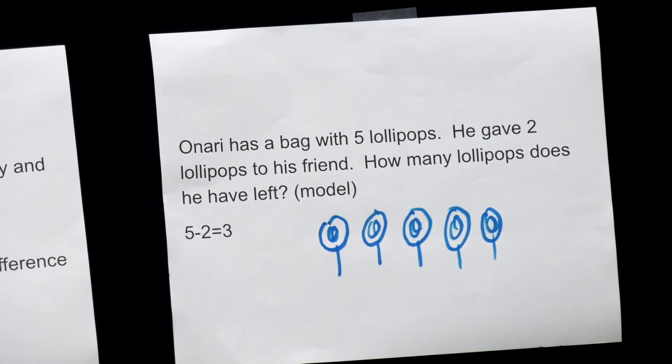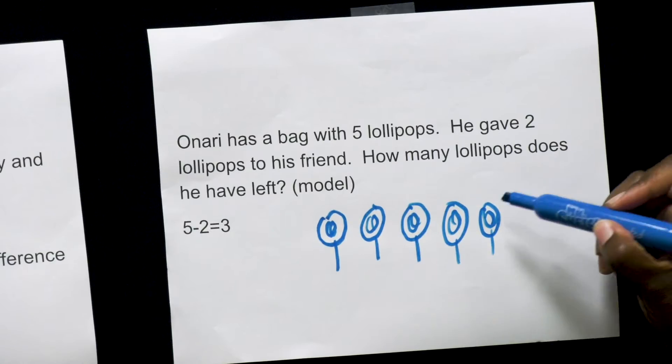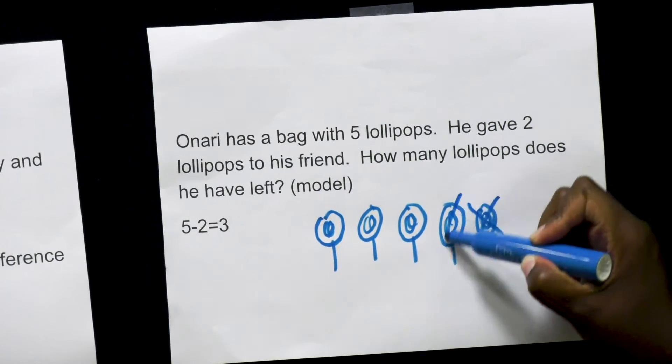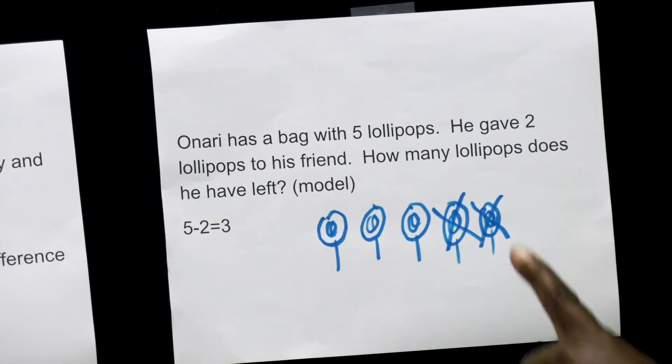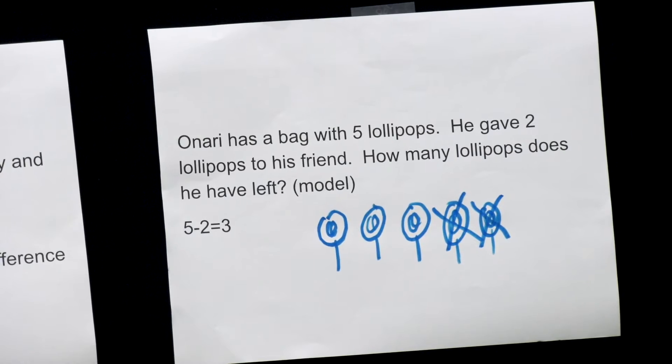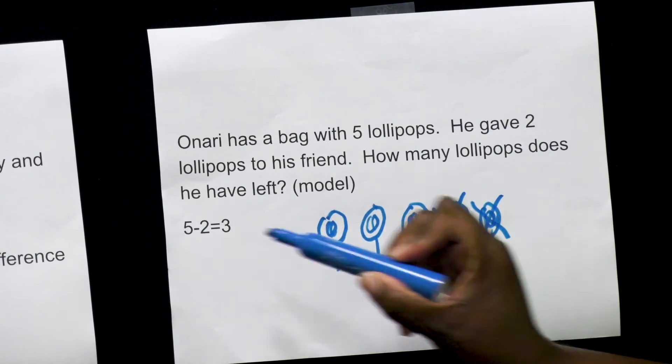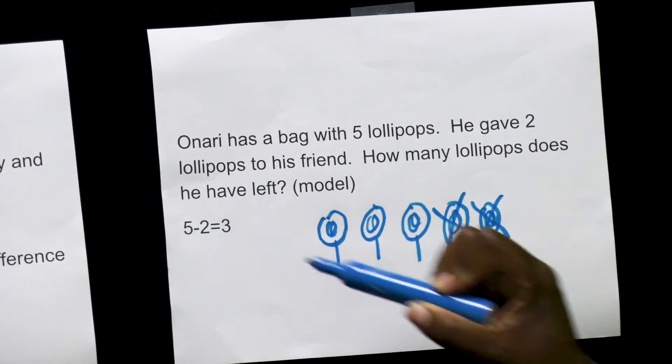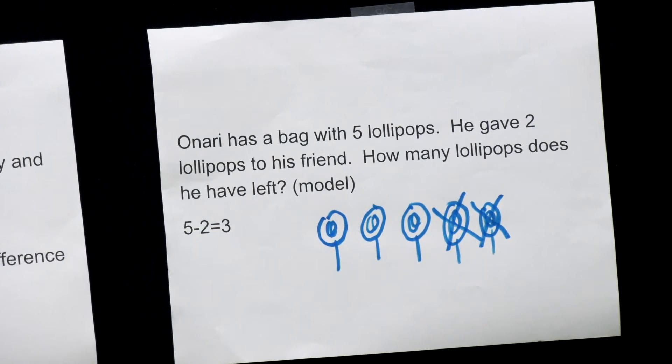He gave two lollipops to his friend. So we have to cross out that many, two. How many lollipops does he have left? So the problem says five minus two equals three. So Onari has three lollipops left.